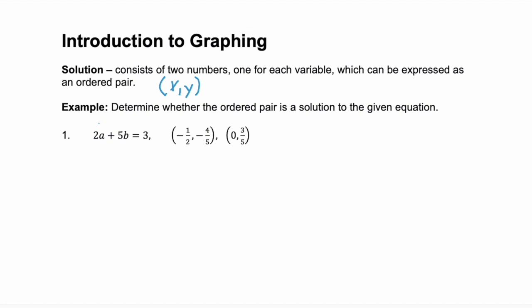For the first example, we're asked to determine whether the ordered pair is a solution to the given equation. And notice that our variables aren't x and y, they're a and b. Well, in math, your coordinates will always be in alphabetical order. So here, our x-coordinate is actually going to be a, and our b-coordinate is our y.